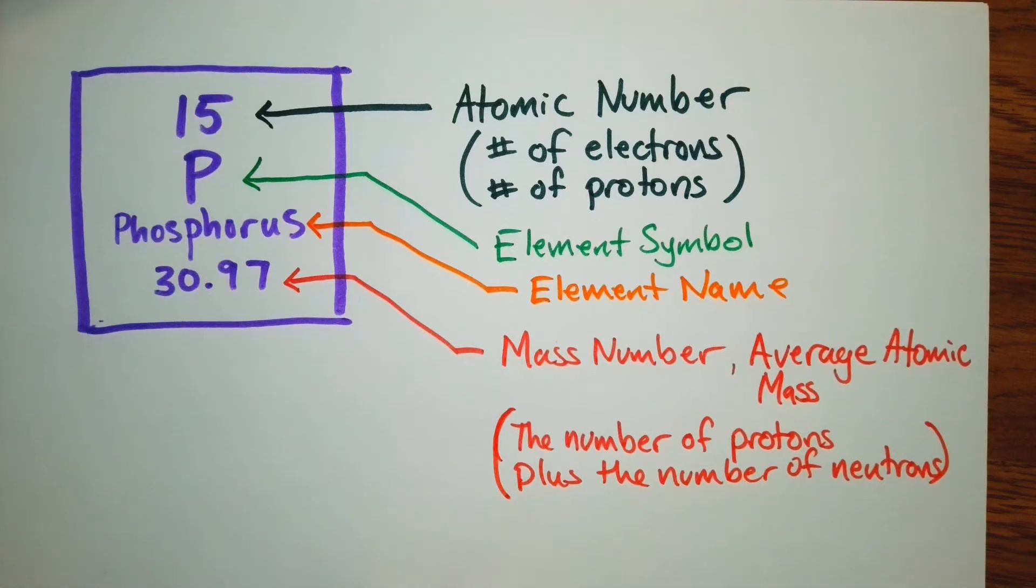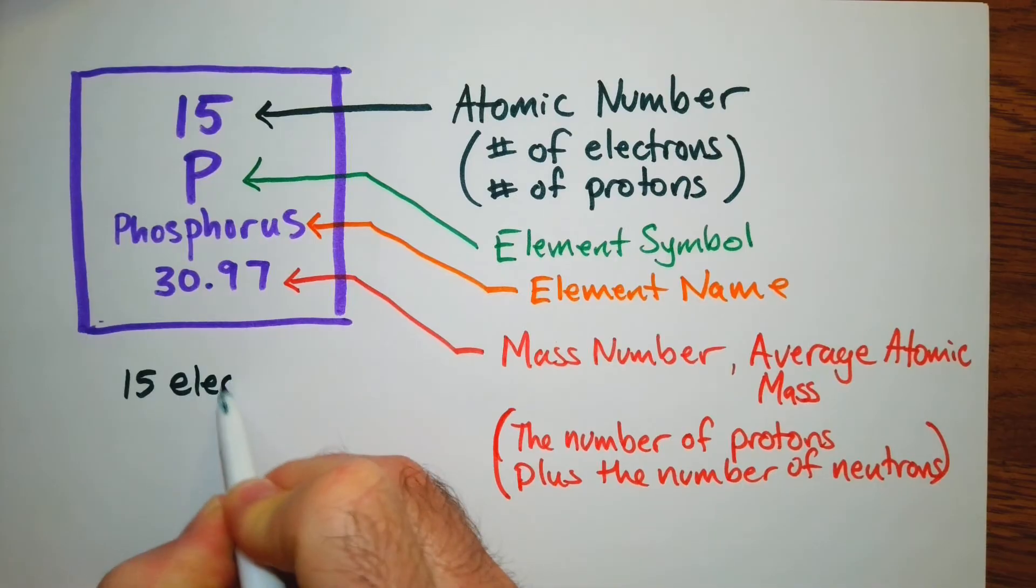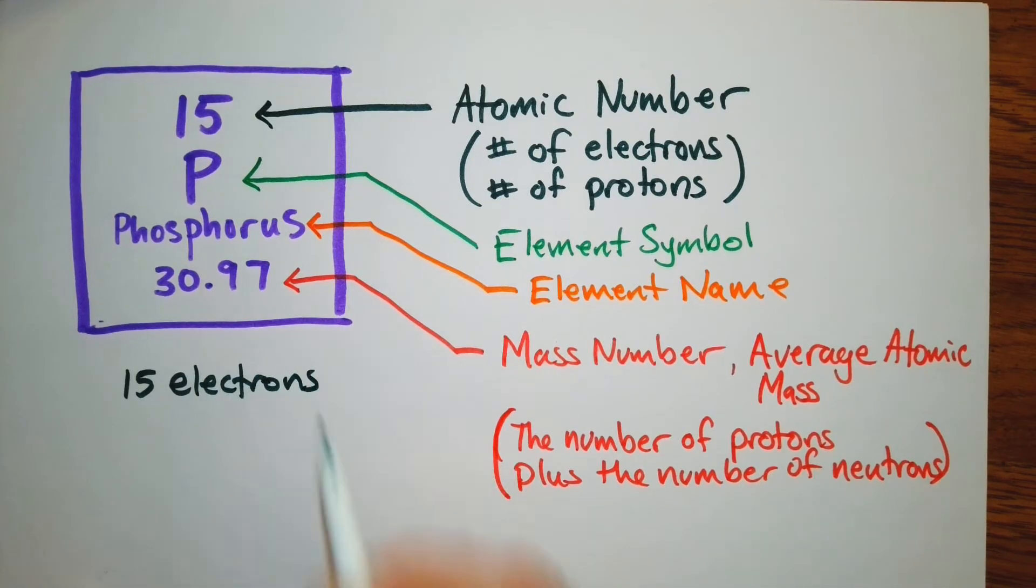So in these examples, for our atomic number, that tells us the number of protons, number of electrons. So we can say over here that we have 15 electrons. We also have 15 protons. Because our atomic number is 15. Those numbers will always be equal in a neutral atom.